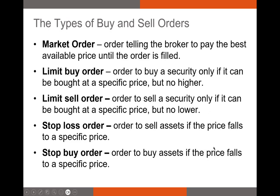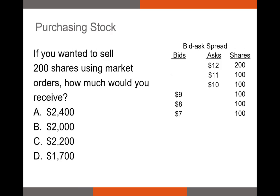We can also have stop loss orders and stop buy orders. A stop loss order is a really good hedge or risk mitigation tool — it allows you to place an order to sell assets if the price falls to a specified level. For example, if I'm worried about my Apple shares falling five percent, I could put in a stop loss order to sell those shares if the price falls to a certain level, essentially reducing my risk of the share price tanking below that point. A stop buy order is a great way to make sure you don't miss out — you put in an order that says if the price of this asset rises to a certain level, buy these shares because I expect them to appreciate in the future.